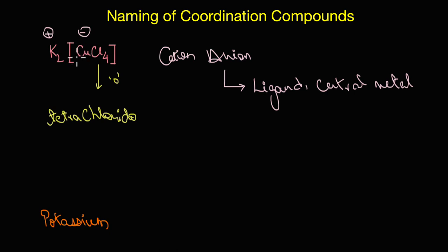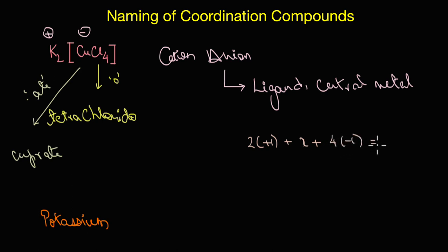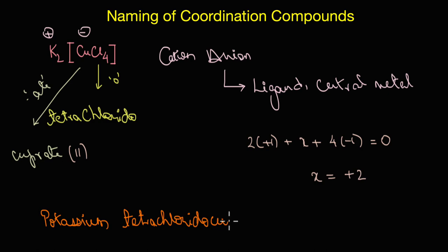The central metal atom is in an anionic complex, so its name ends with 'ate'. If it were in a positively charged complex the name would be 'copper', but since it is in a negatively charged coordination entity the name is 'cuprate'. For the oxidation state: two times plus one (potassium) plus x (copper) plus four times minus one (chlorine) equals zero, so x equals plus two. The final name is potassium tetrachloridocuprate(II).